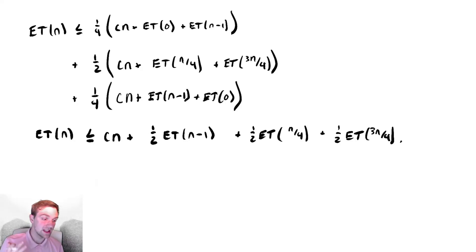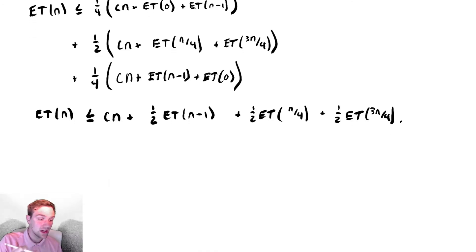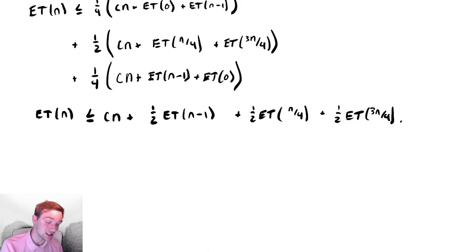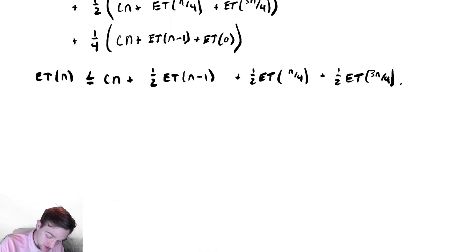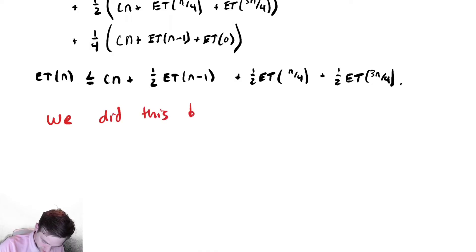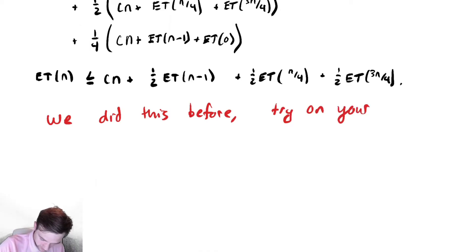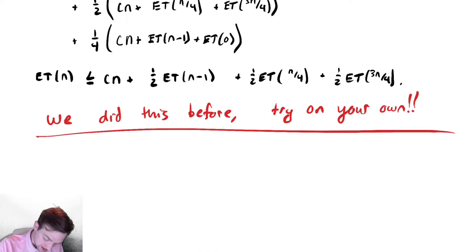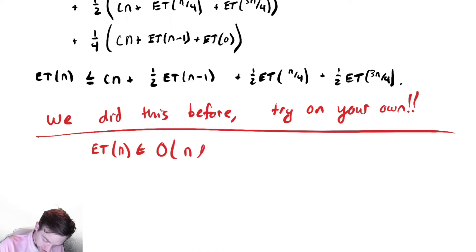We now have an expression that we've actually seen before when studying recursive examples. I'll leave this to you to analyze using a recursion tree — we did exactly this before, so try it on your own. You should get that E[T(n)] is in O(n log n).